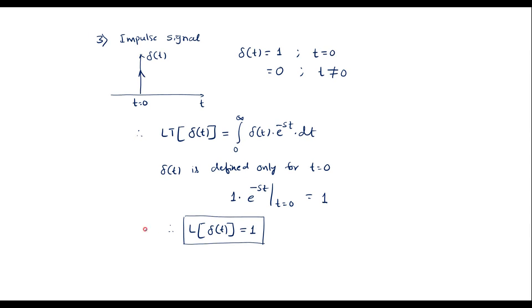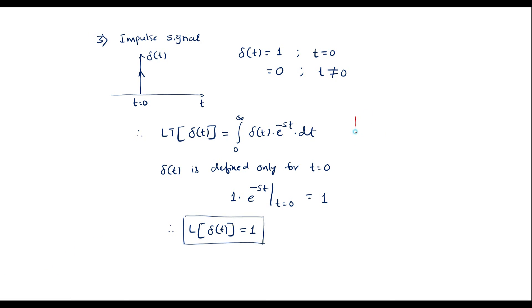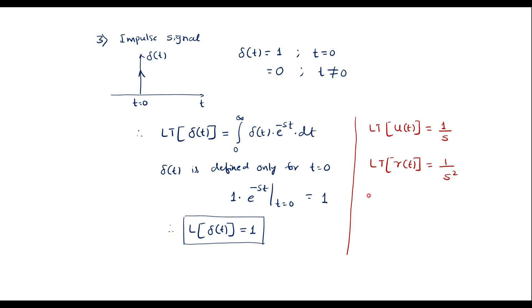So we have found the Laplace transform of standard functions. To summarize: the Laplace transform of u of t is 1 by s; the Laplace transform of ramp signal r of t is 1 by s squared; and the Laplace transform of unit impulse signal delta of t is equal to 1. Thank you for watching.